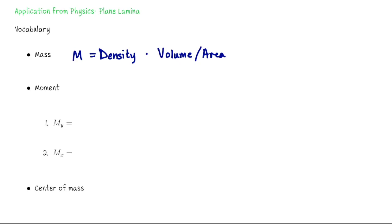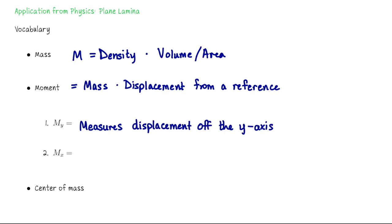The word moment describes how the mass is arranged or located relative to your coordinate system. We measure that by taking mass and multiplying it by its displacement from a reference. Working in the xy plane, we need to measure two types of moments. m sub y measures displacement off of the y axis, so that sees how the mass is situated relative to the y axis. Similarly, m sub x measures displacement off of the x axis.